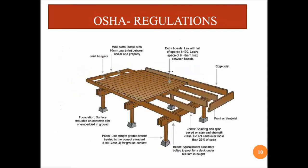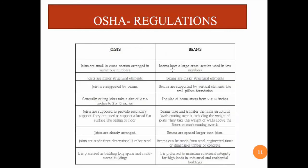Joists are the smaller structural elements arranged in numerous numbers with smaller cross-sections, while beams are major structural elements with large cross-sections used in fewer numbers. Joists are supported by beams, and beams are supported by vertical elements such as columns, walls, pillars, or foundations. Joists are closely arranged, while beams are spaced farther apart.